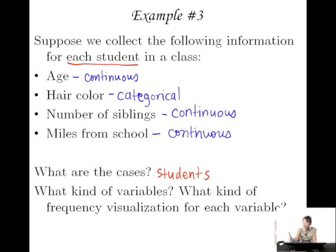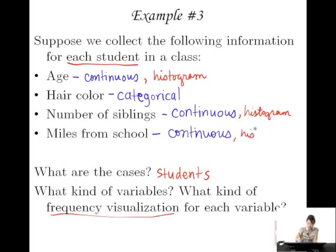So because of that, what kind of frequency visualization would we use for each variable? Well, for age, for every continuous variable, we'd use a histogram. And so why don't we just fill that in for all of these. And for our one categorical variable, we'd use bar graphs.